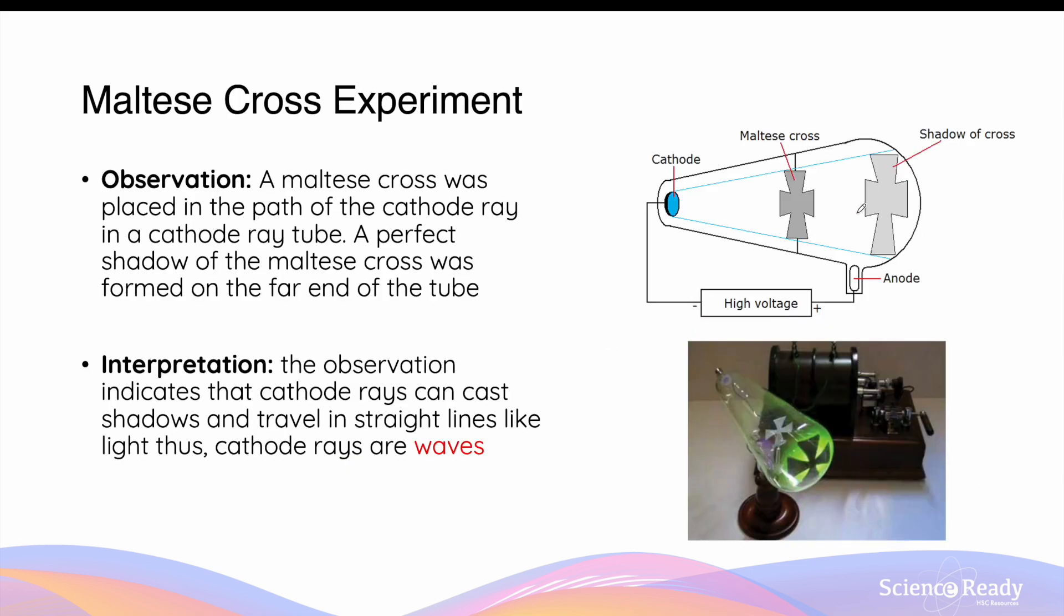The first experiment involves placing a Maltese cross metal plate in the path of the cathode ray between the cathode which emits the cathode ray and the anode which is positively charged. When the Maltese cross is present, a clear shadow in the shape of a Maltese cross is casted directly behind the Maltese cross, and this shadow is outlined by the green fluorescent light that is normally formed behind the anode in a cathode ray tube.